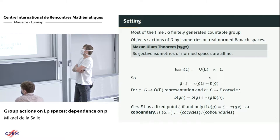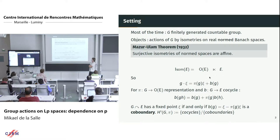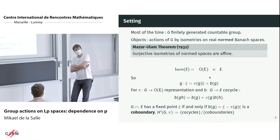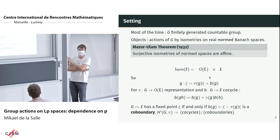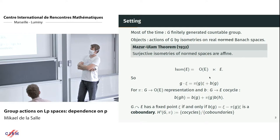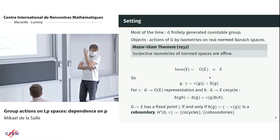The setting: G will always be a finitely generated countable group. Most results can be generalized to locally compact groups, but I will stick with this for clean statements. The objects I'm studying are actions by isometries. If I have an action by isometries on a normed space, I get by completion an action by isometries on a Banach space, so it's sufficient to restrict to Banach spaces.